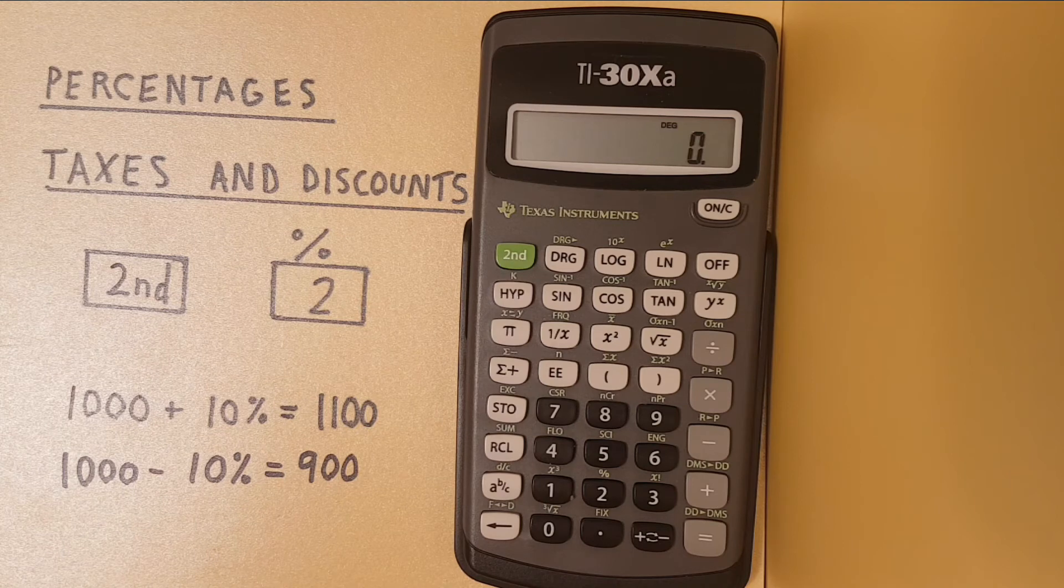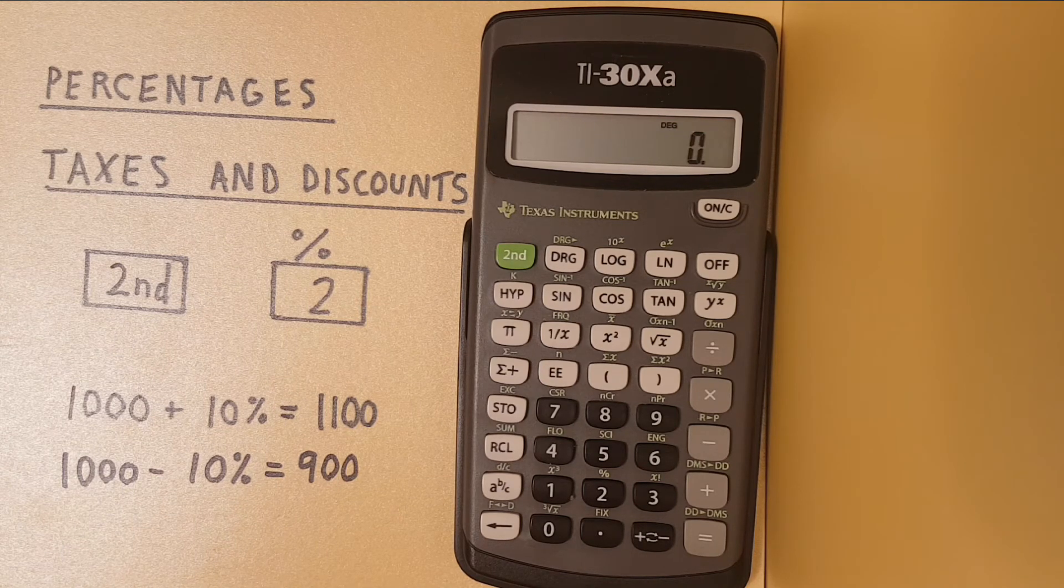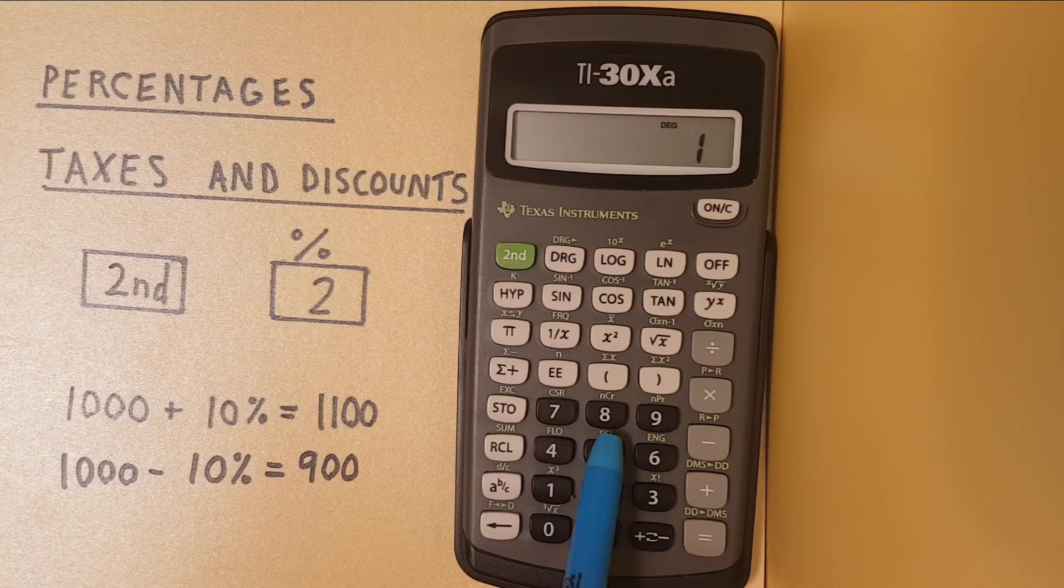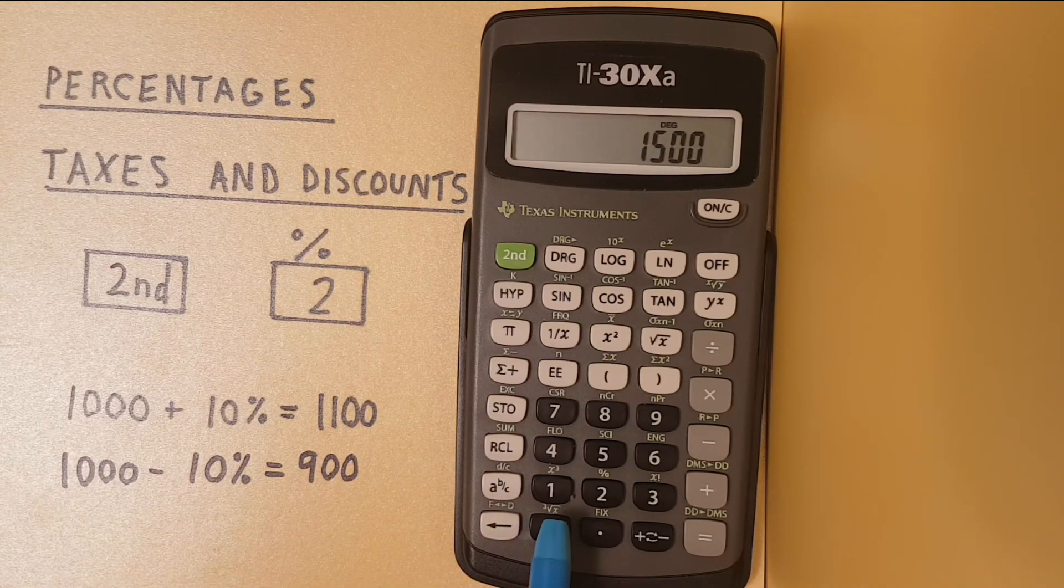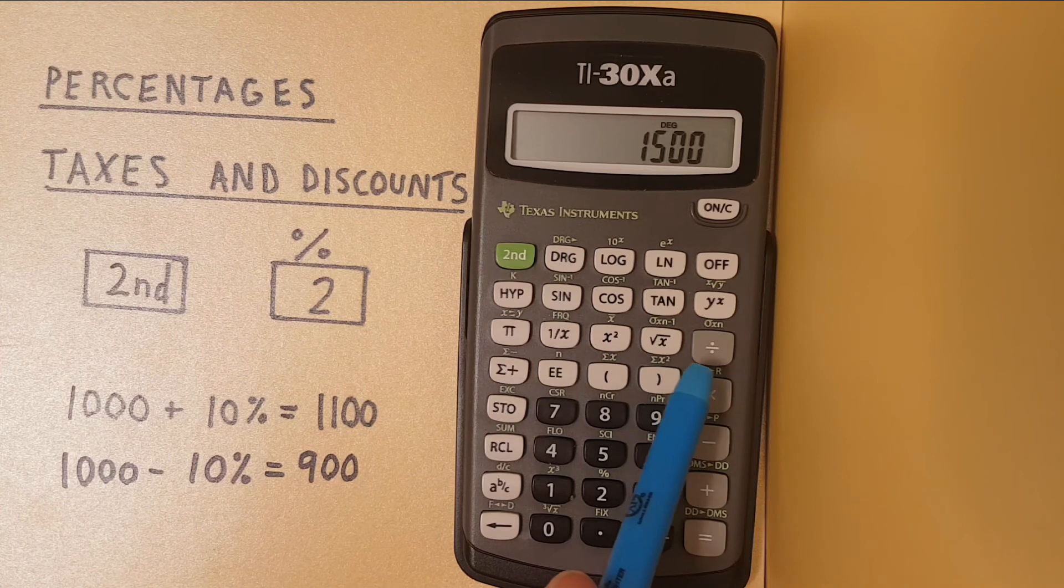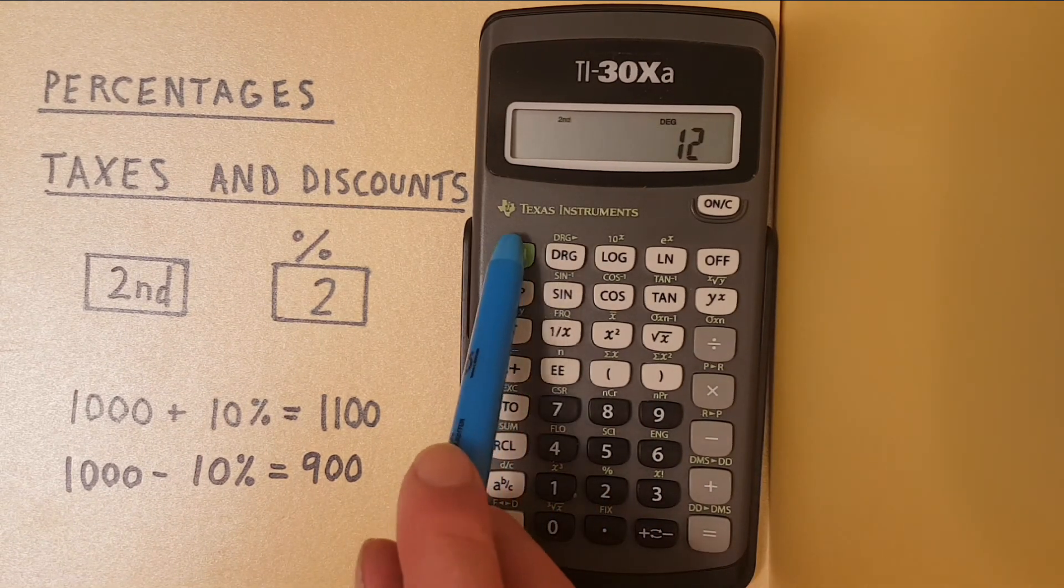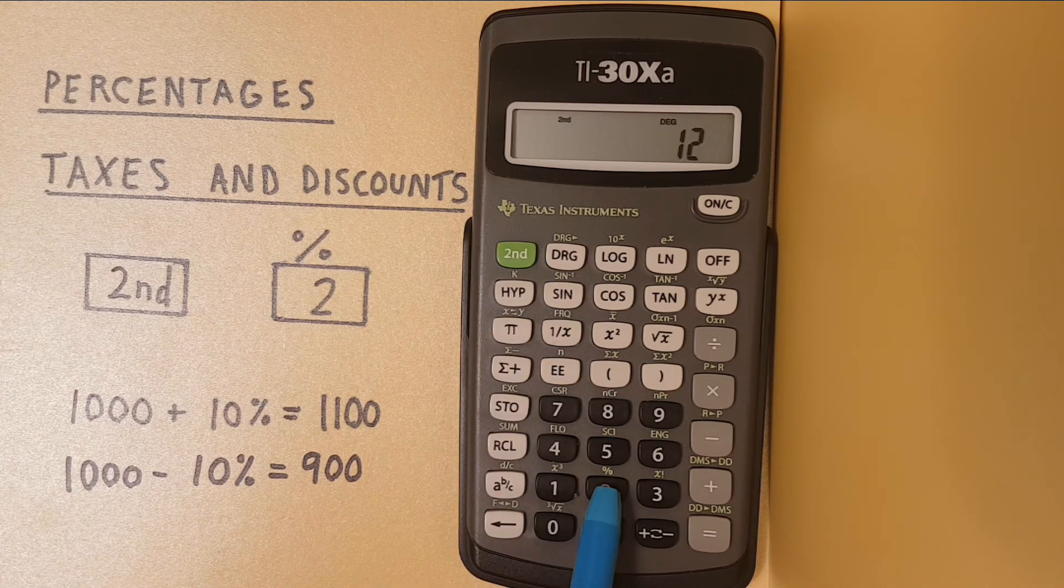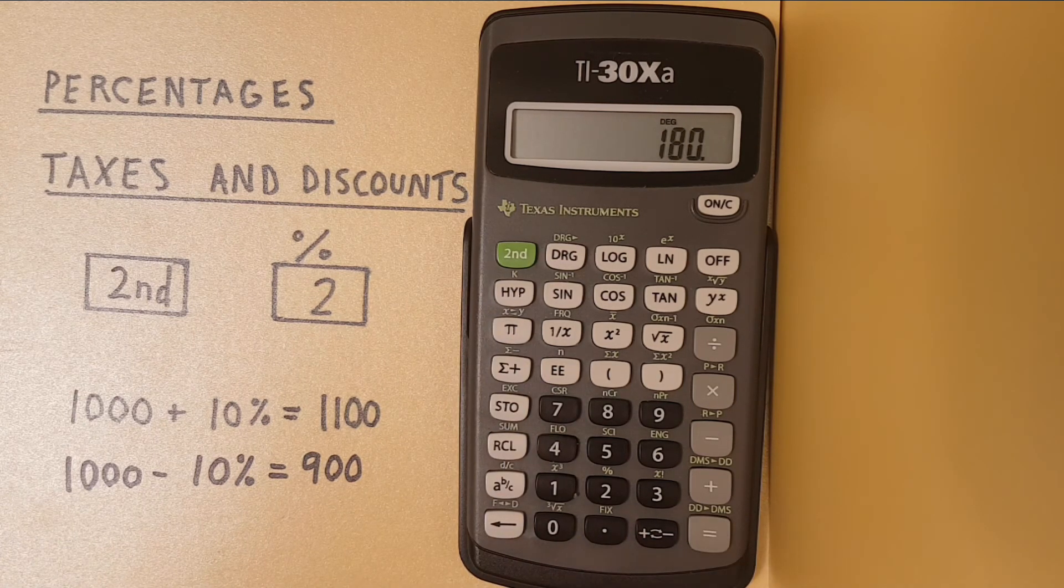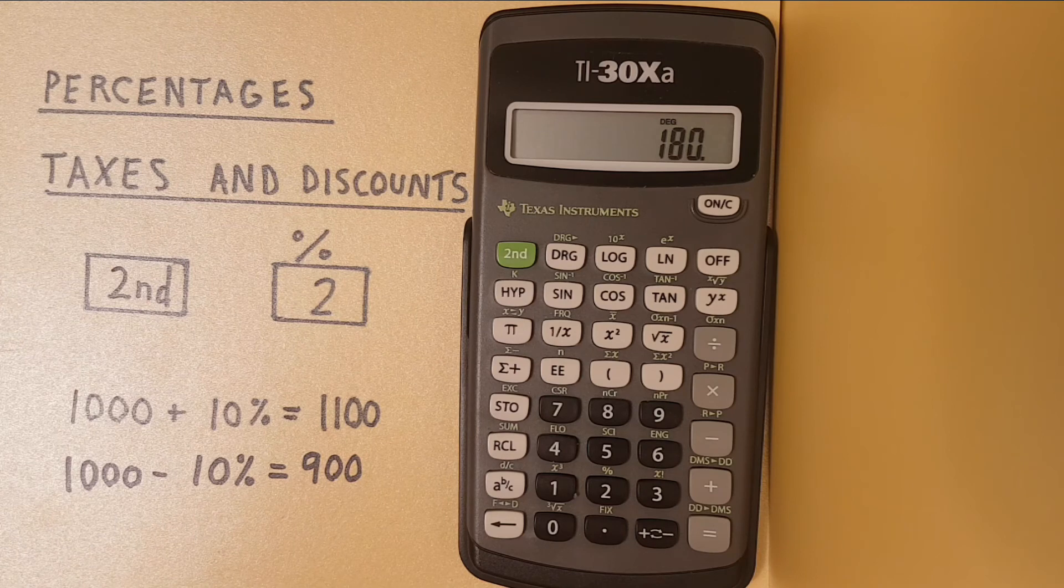Let's try a few more. What is 12% of 1,500? 1,500 times 12 second function percent equals 180 which is correct.